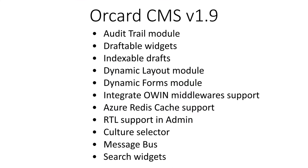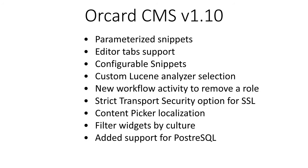In version 1.9, they added the audit trail module, draftable widgets, indexable drafts, dynamic layout module, dynamic forms module, integrated OWIN middleware support, Azure Redis cache support, RTL support in admin, cultural selector, message bus, and search widgets. The current release, version 1.10, added parameterized snippets, editor tab support, configurable snippets, custom Lucene analyzer selection, a new workflow activity to remove a role, strict transport security option for SSL, content picker localization, filter widgets by culture, and added support for Postgres.